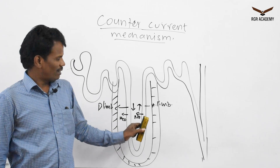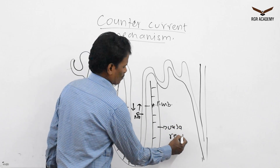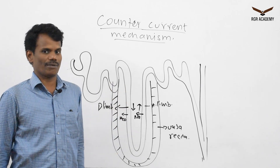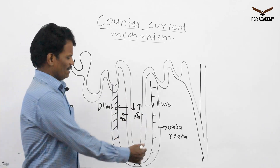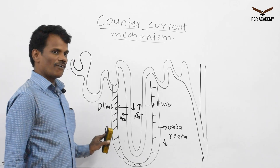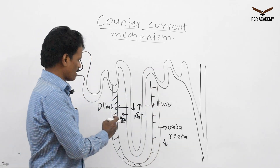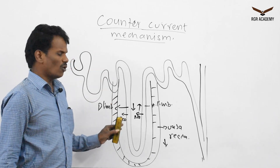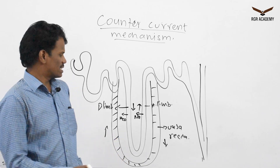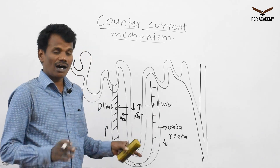In the blood vessel, the vasa recta, blood is also flowing in counter current mechanism. The descending limb of the vasa recta carries blood flowing downwards and the ascending limb carries blood flowing upwards. So the flow of fluid inside the blood vessel is also in a counter current way, and the flow between the Henle's loop and the vasa recta is also counter current.